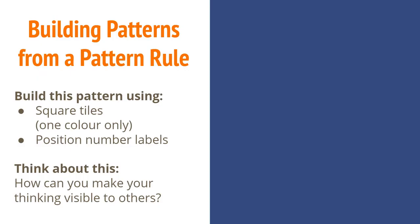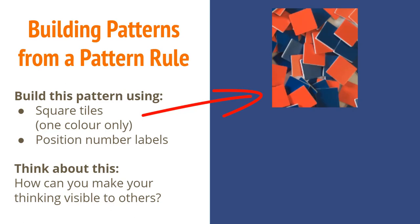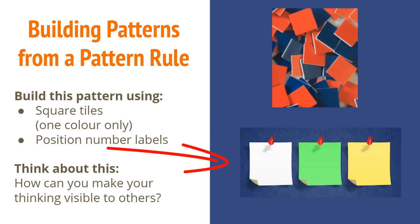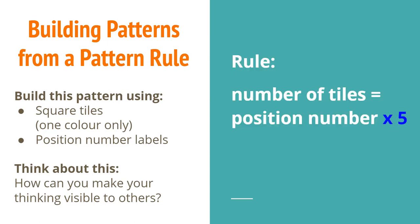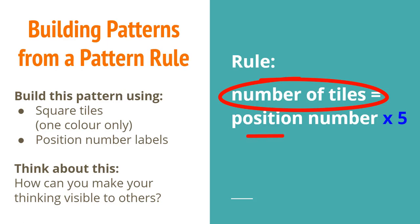The next task we're going to do is build some patterns from a pattern rule. I'm going to ask you to get out your square tiles — you only need one color for now, but you'll need two colors later. You're going to need some position number labels: three sticky notes, one that says one, one that says two, and one that says three. I'd like you to build position one, position two, and position three of this pattern rule, where the number of tiles at each position is equal to the position number multiplied by five.